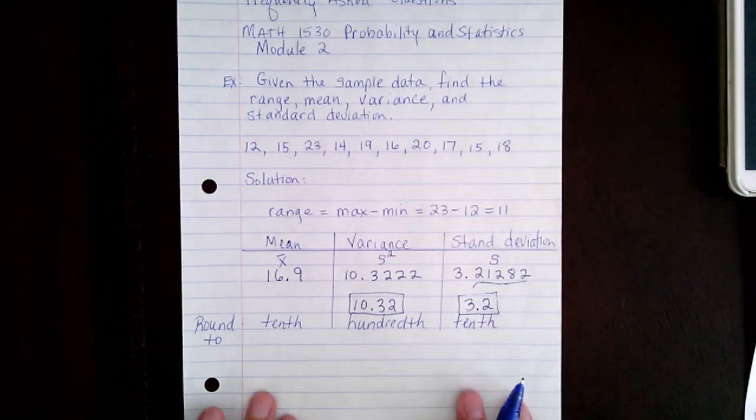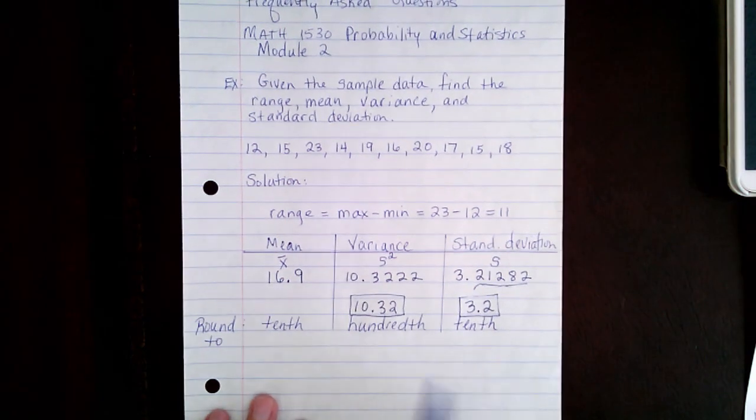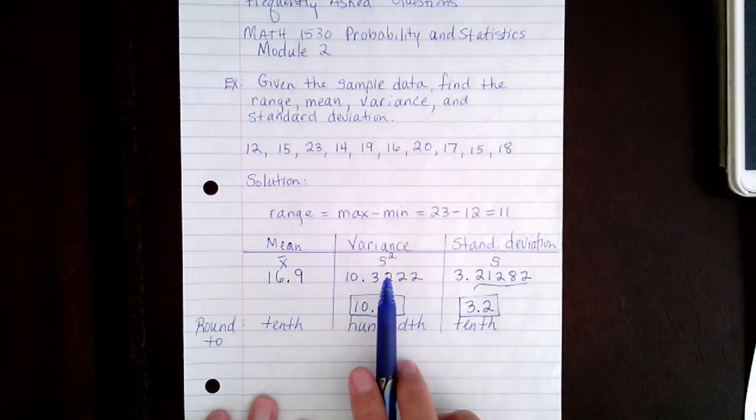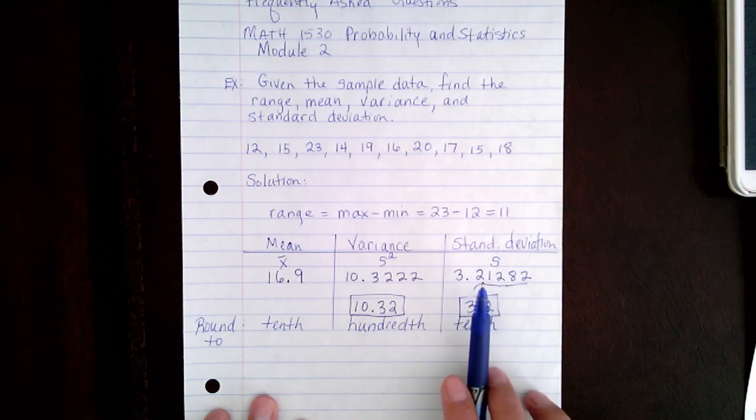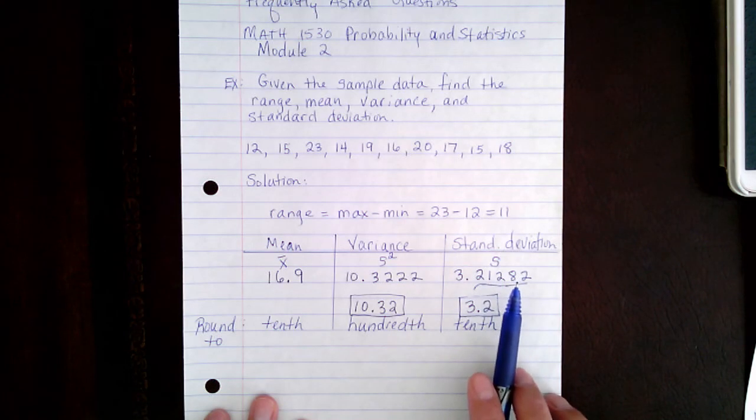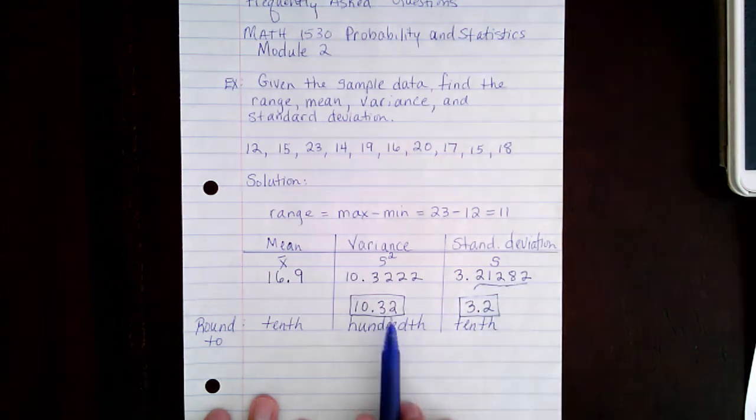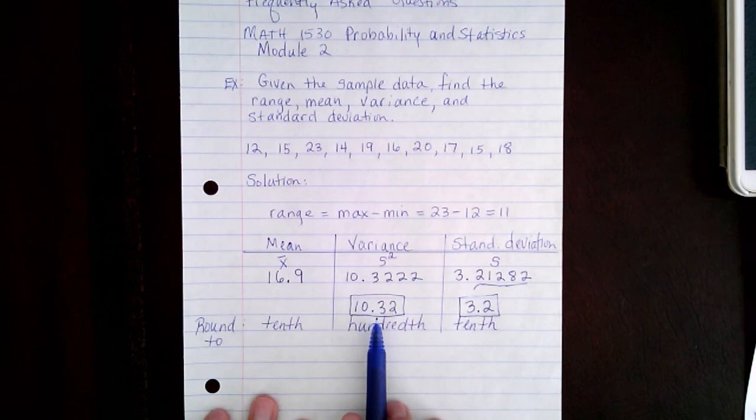So when you're working these problems, if you're asked to find the variance first, just know that you're going to use the standard deviation on the calculator, square it, keep several digits, at least 5 digits after the decimal before you square it to avoid rounding error, and then you can round the variance to the appropriate place value.